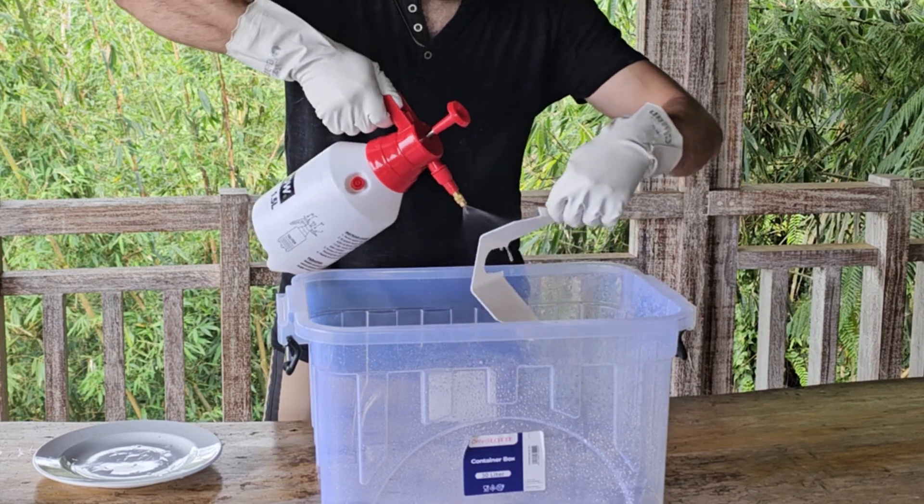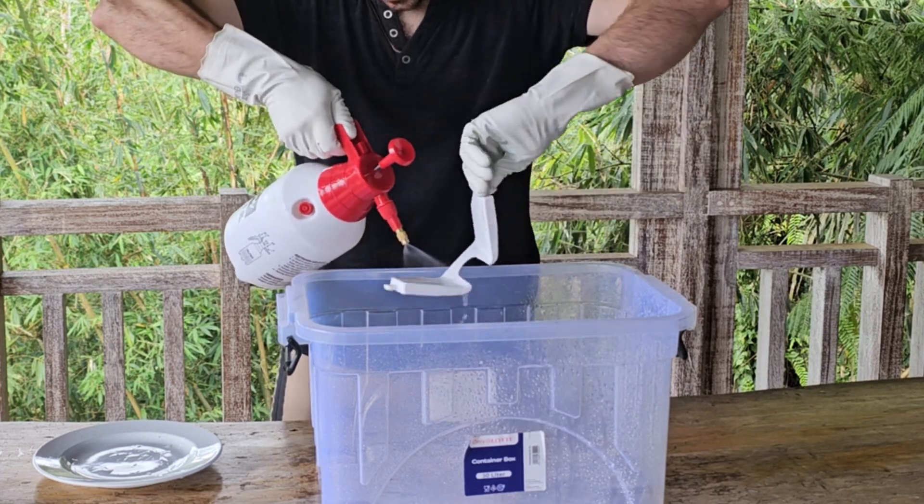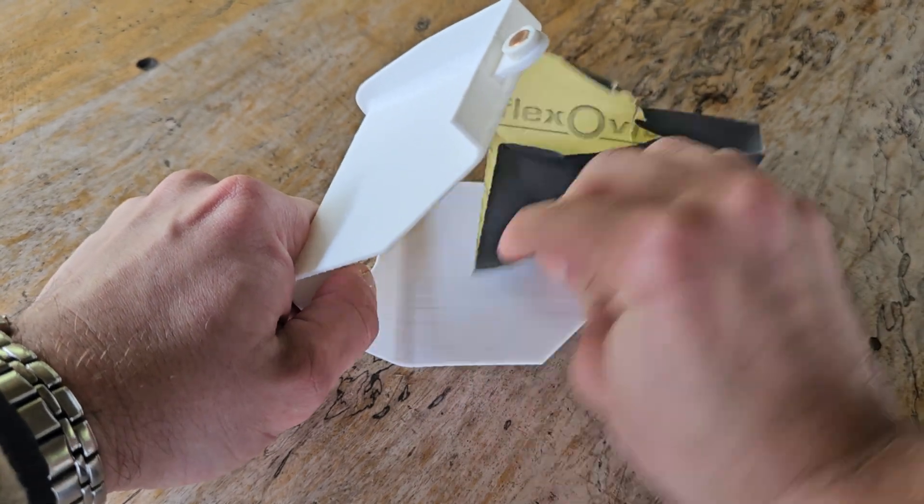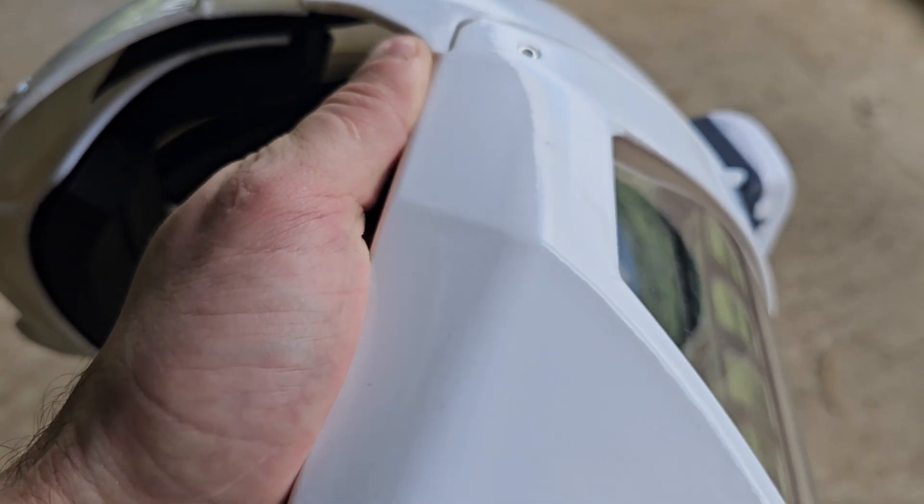Otherwise you get uneven cloudy streaks because the cold air makes the acetone set too quickly. If you spray the raw part without sanding you might still see the layer lines but to the touch you'll still have that sealed polished finish. If you want to get rid of them completely give it a quick coarse sand and the acetone will do the rest.